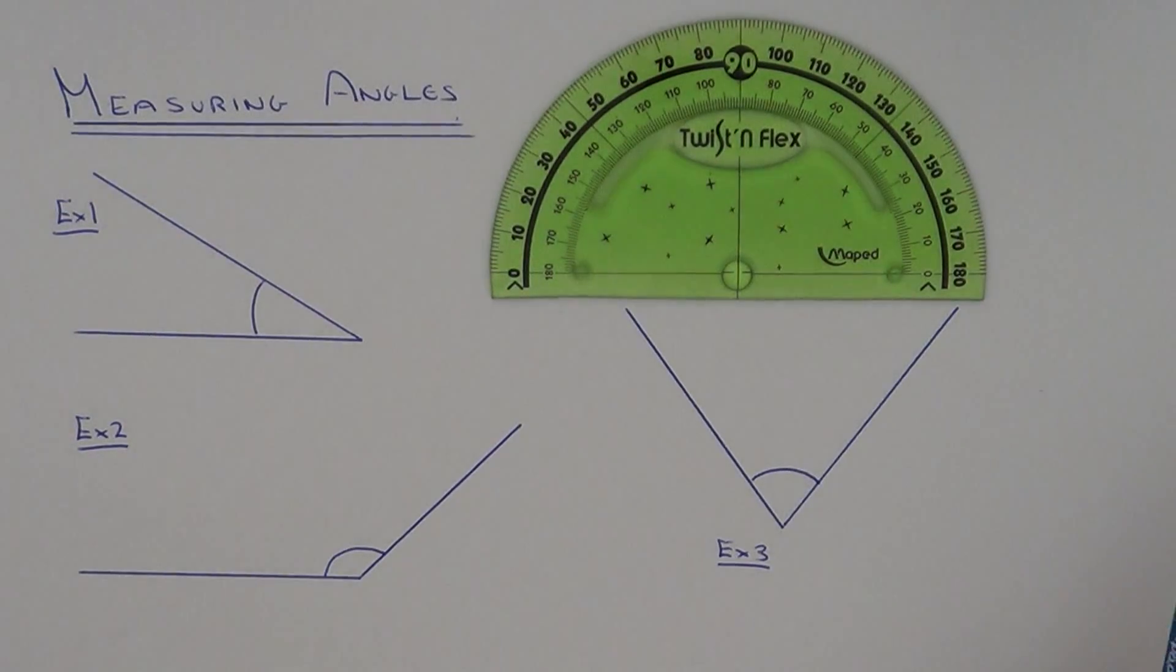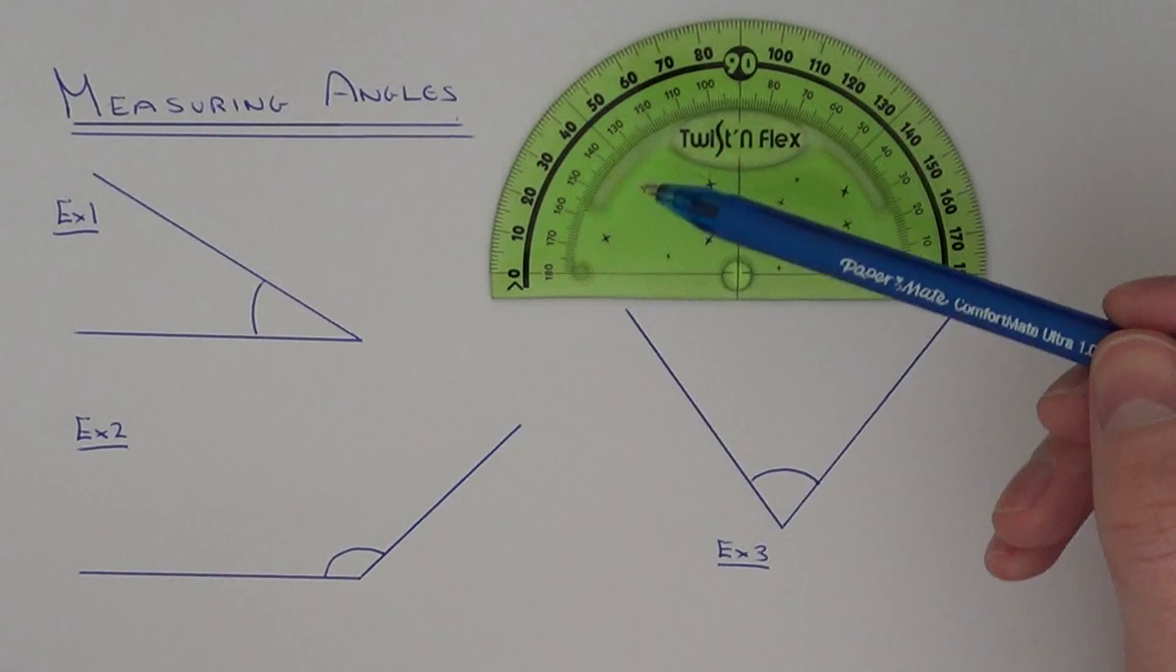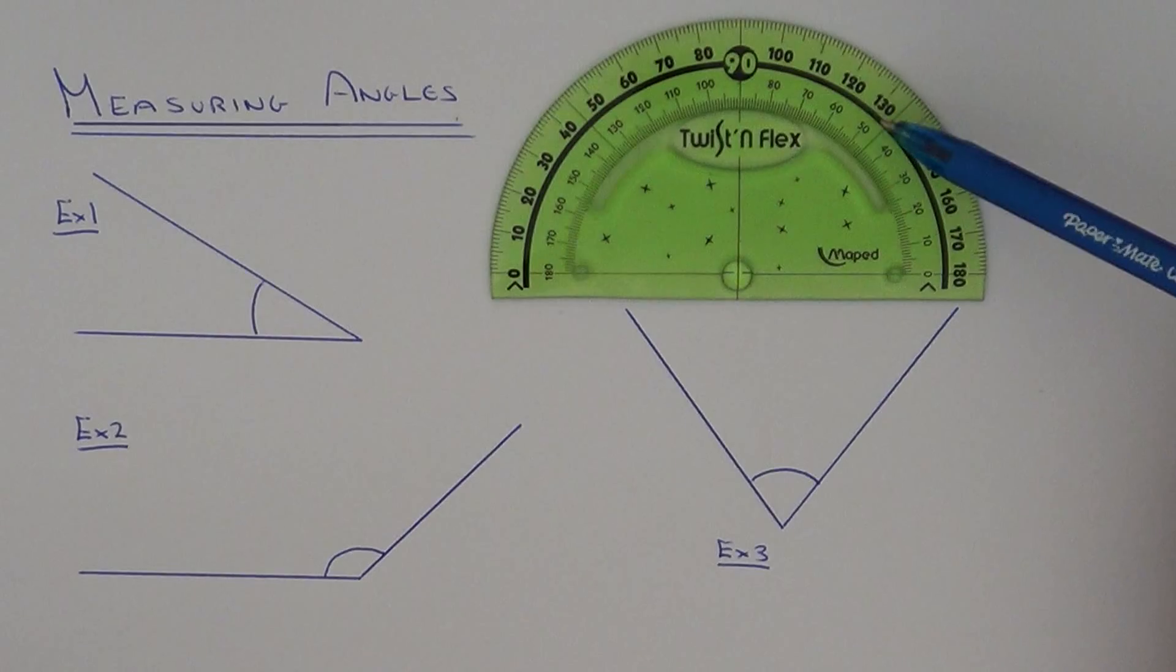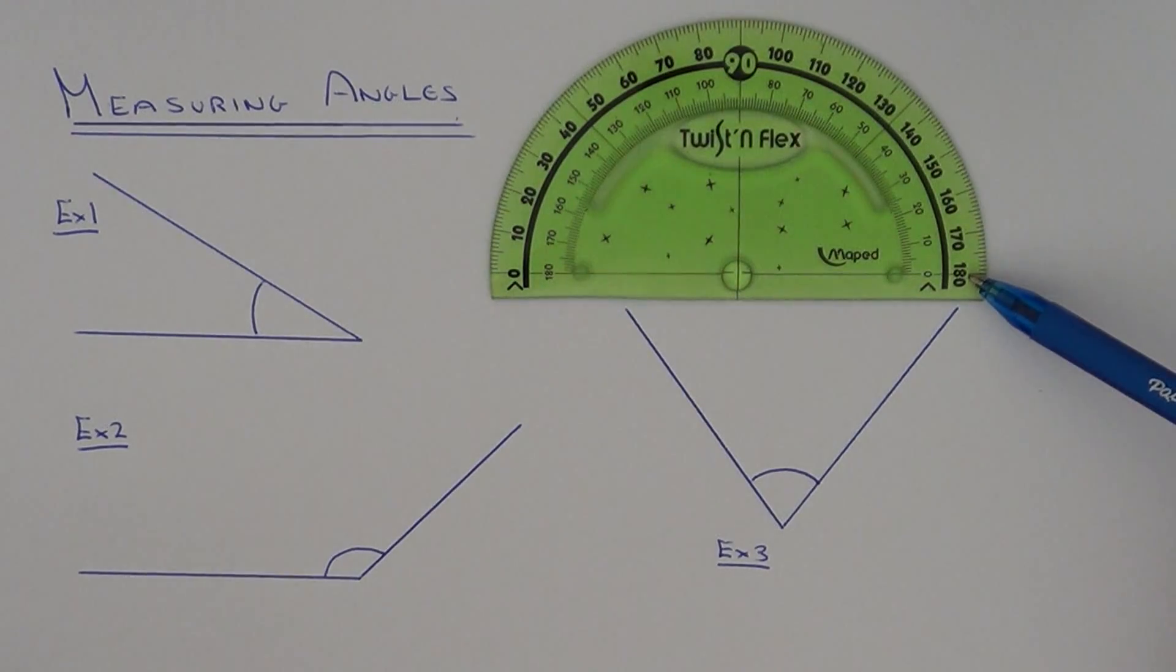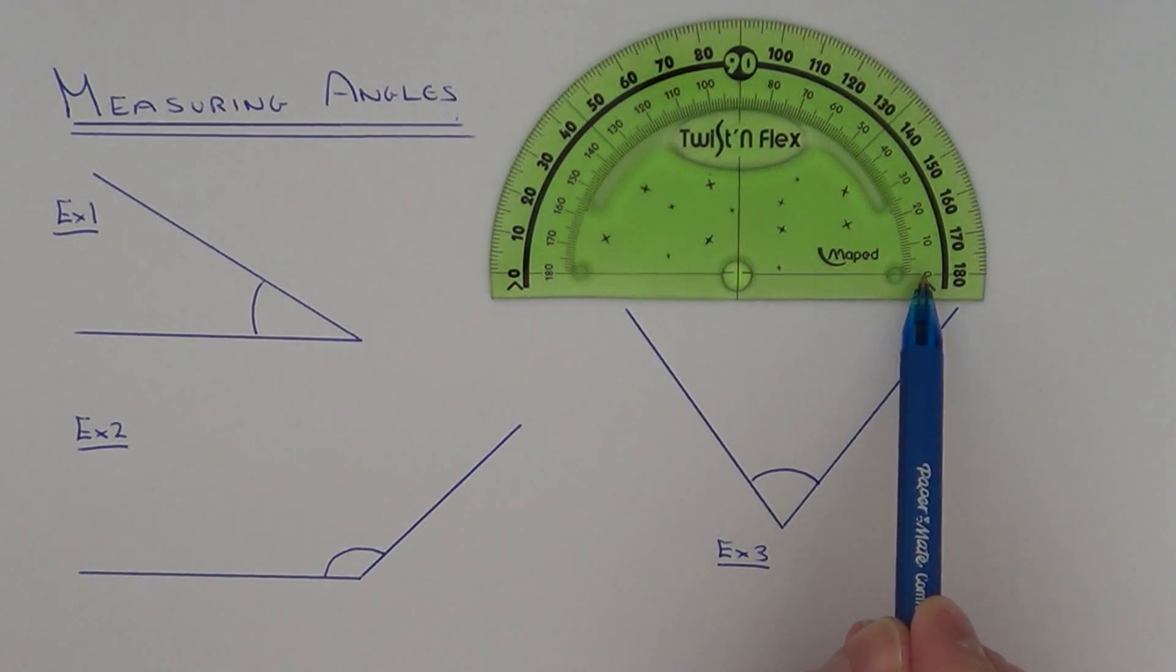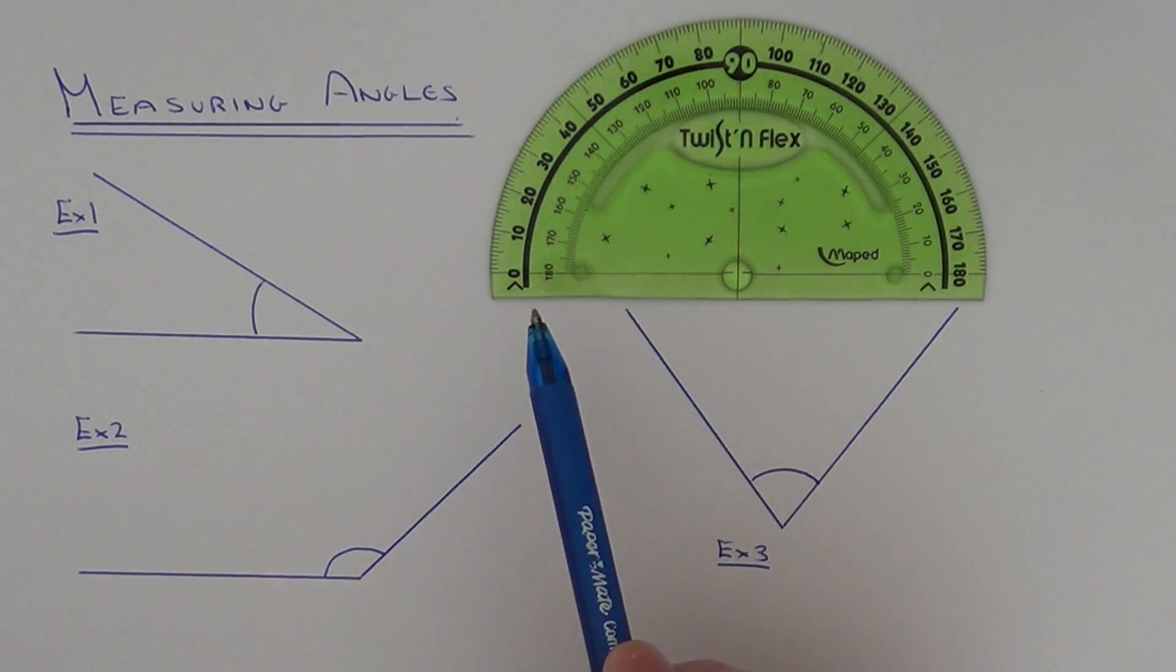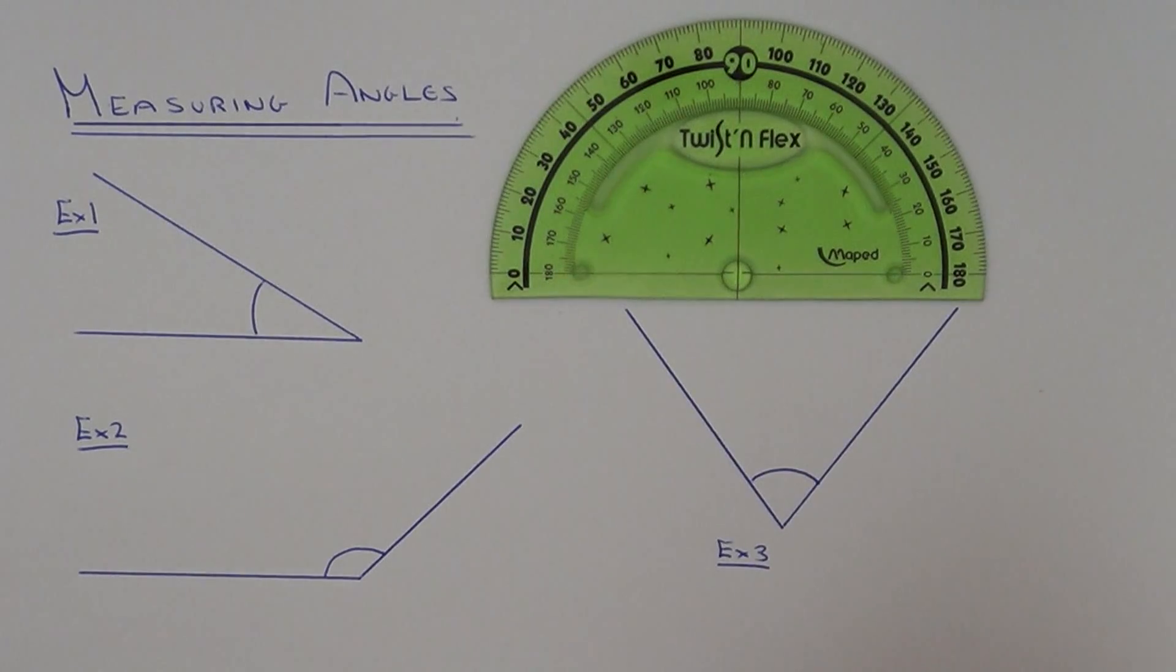An angle can be measured using a protractor. On your protractor you'll notice that you have two scales. There's an outside scale which goes all the way around starting at zero all the way around to 180 degrees, and you have an inside scale which again starts off at zero but goes anti-clockwise around up to 180 degrees. Depending on how you place your protractor onto the angle will depend on which scale you use to measure the angle.